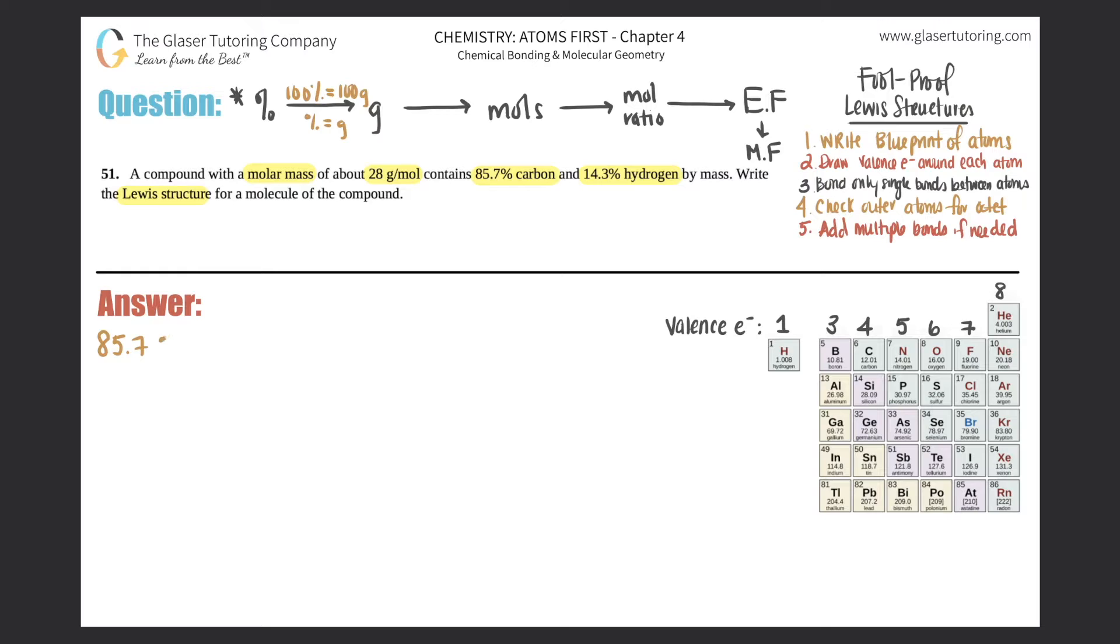So if we go by the first rule by just stating that we used 100 grams, this would be equal to 85.7 grams of carbon and this is 14.3 grams of hydrogen. And that's the first step.